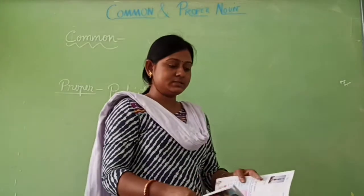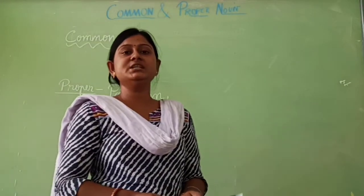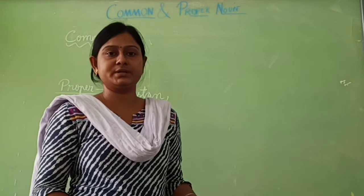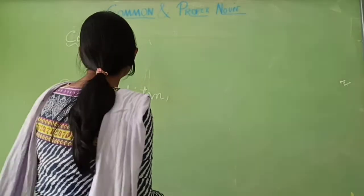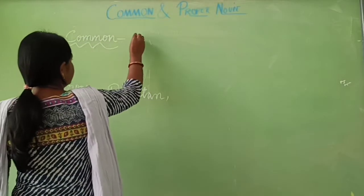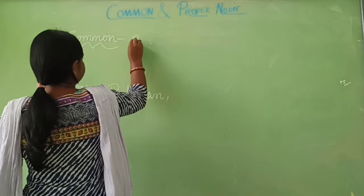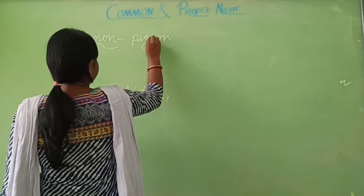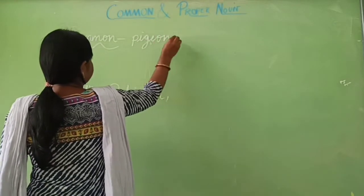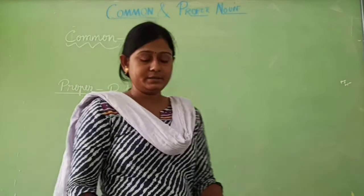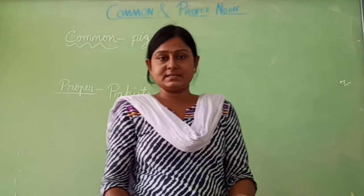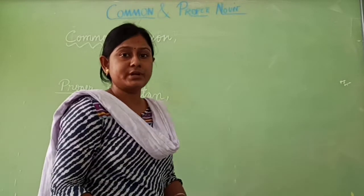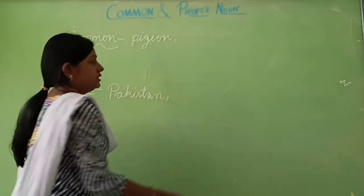Next word is Pigeon. Pigeon is a bird. There are many pigeons in our country, so this is a common name of a bird. Next, Rice. Rice is a food grain. Rice is a common name.